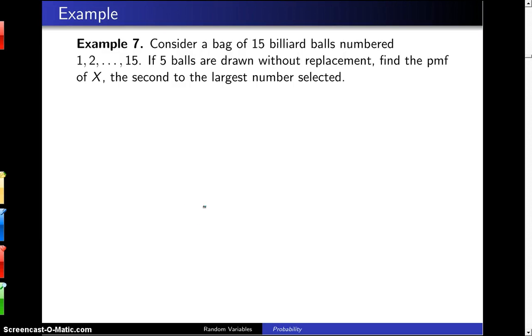Consider a bag of 15 billiard balls numbered 1, 2, 3, all the way up to 15. If 5 balls are drawn without replacement, find the probability mass function of X, the second to largest number selected.